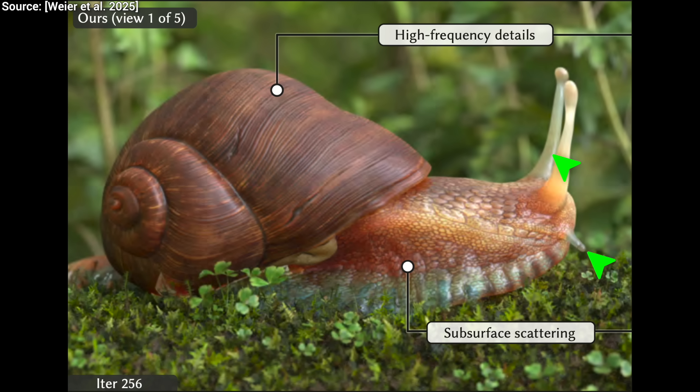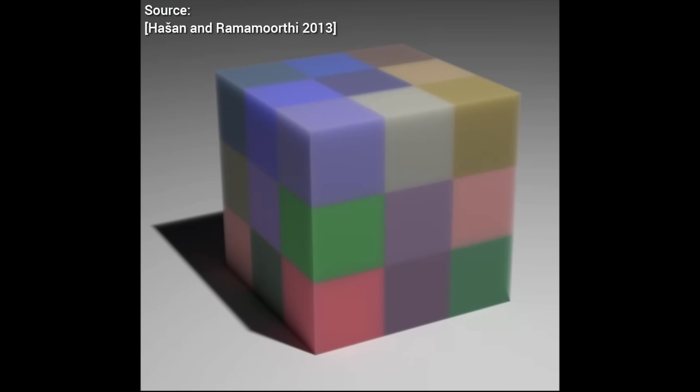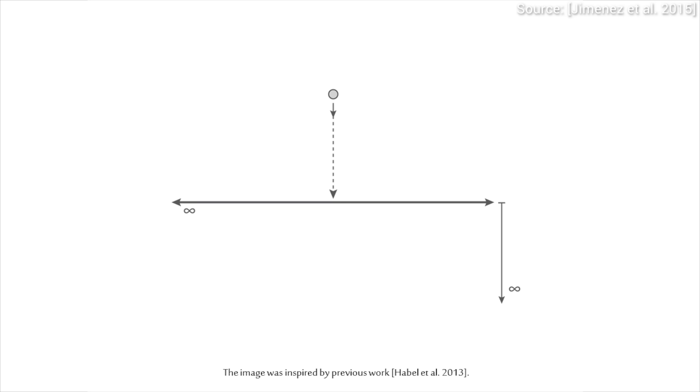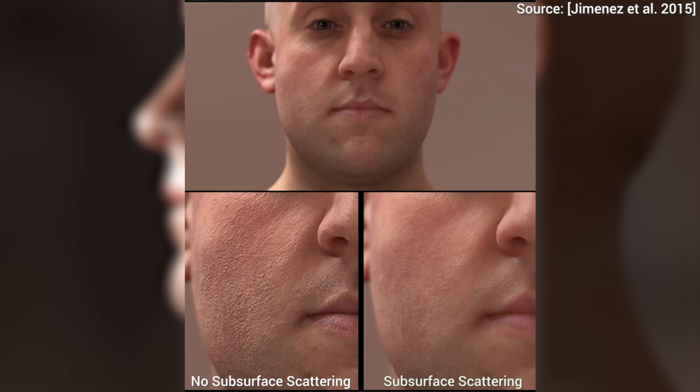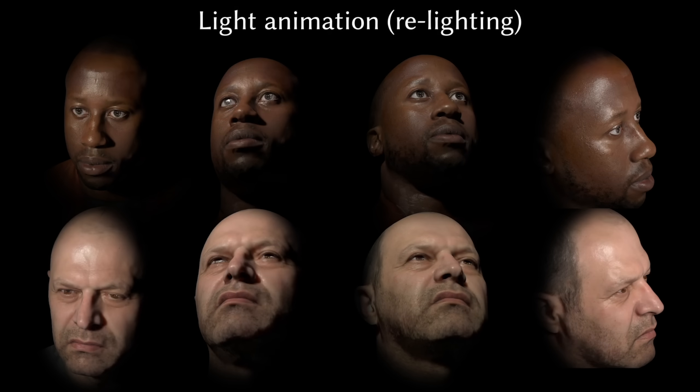Subsurface scattering! Translucent stuff where light enters the object and scatters around in there, creating this beautiful look. Your skin does that too, by the way, as you will see in a later simulation here.